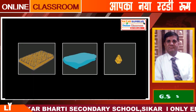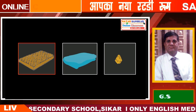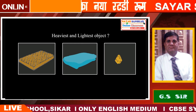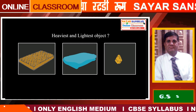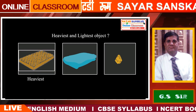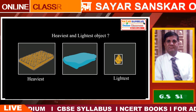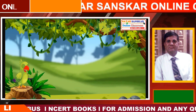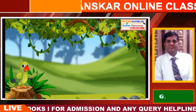Some objects are kept here: a handkerchief, a bed sheet, and a mattress. Children, can you tell me which of these three objects is the heaviest and which is the lightest one? Yes, the mattress is the heaviest and the handkerchief is the lightest. Was your answer the same, children? It seems you have learnt to recognize the lightest and heaviest objects.